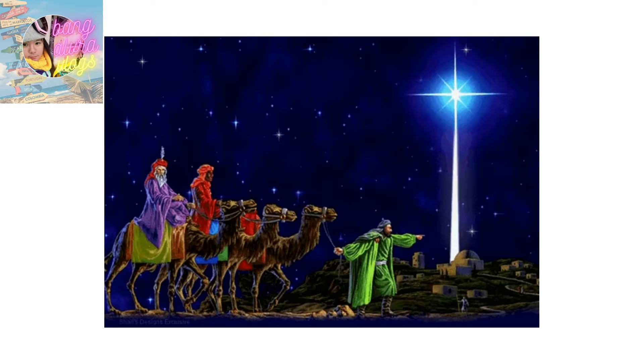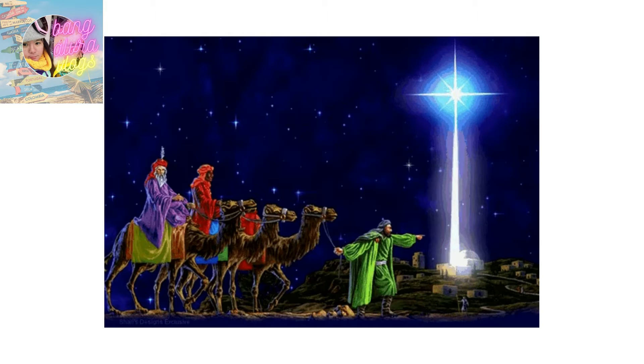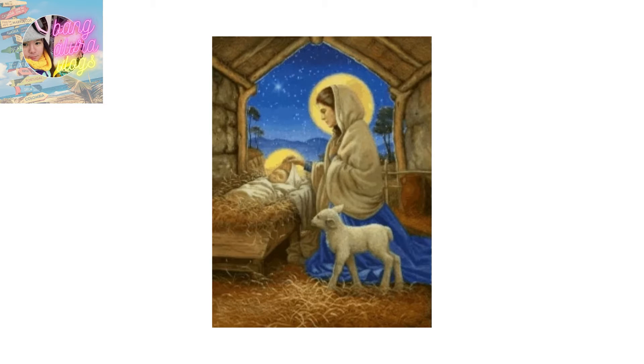What two planets make the Christmas star? The Christmas star as some have dubbed it, is not a star but rather the conjunction of the solar system's two largest planets Jupiter and Saturn. The two gas giants will be the closest they have been to each other in about 400 years and will be visible for the first time in the night sky in roughly 800 years.